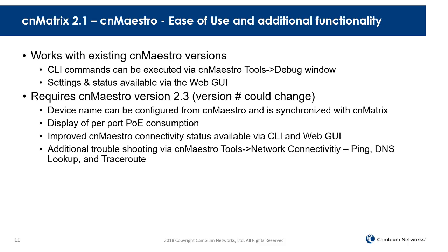CN Maestro is probably our most important management interface. CLI commands can now be executed directly from CN Maestro — go to the tools and debug window and enter any CLI command from the CN Maestro interface. Settings and status available via the Web GUI are also now accessible. The following enhancements require the next version of CN Maestro, due out towards the end of September: the device name can be configured from CN Maestro and is synchronized with CN Matrix, display of per-port PoE consumption is available, improved CN Maestro connectivity status is available via CLI and Web GUI, and additional troubleshooting tools allow you to ping, do a DNS lookup, and run a traceroute from your CN Maestro interface.